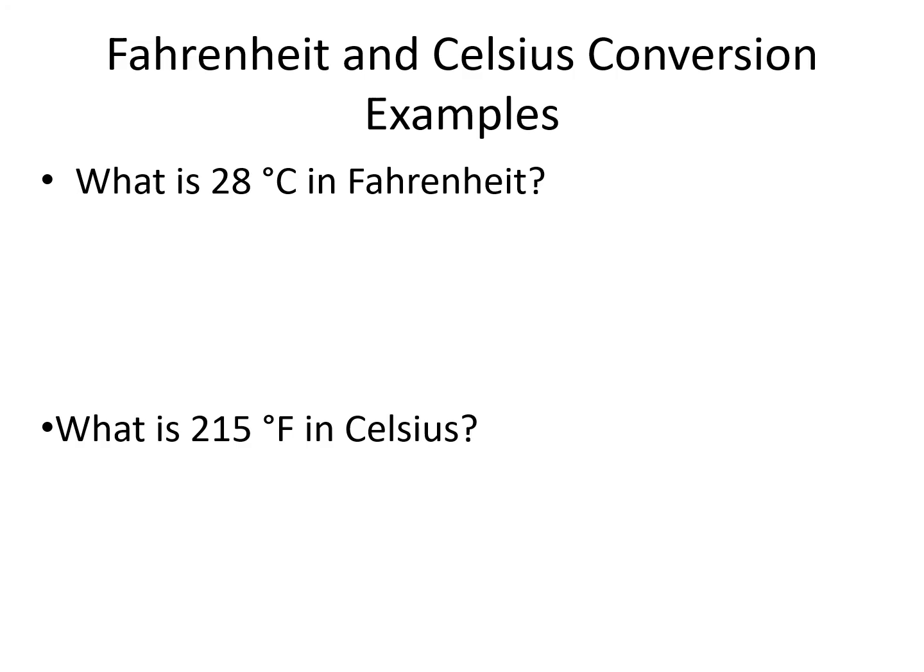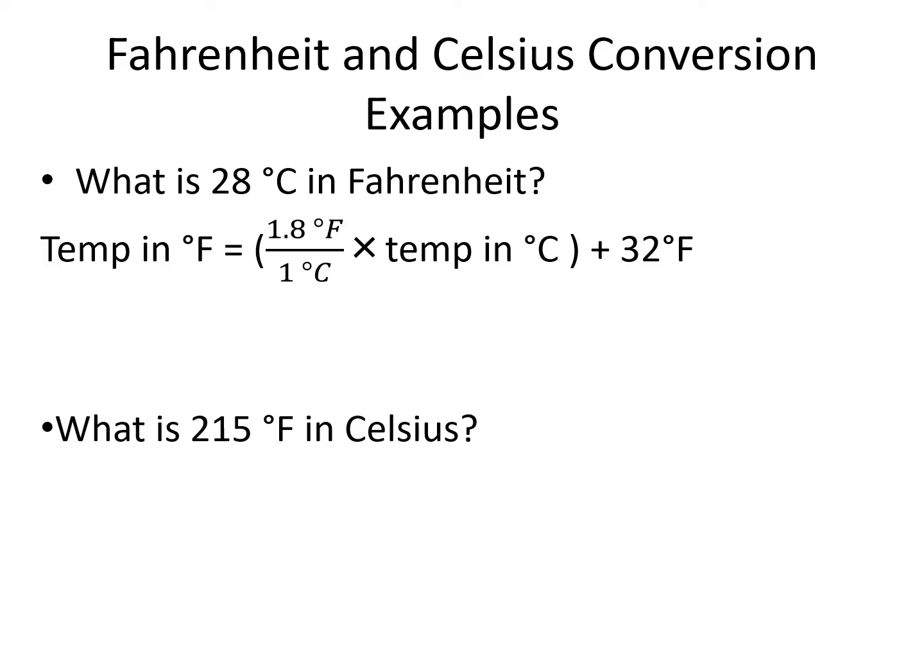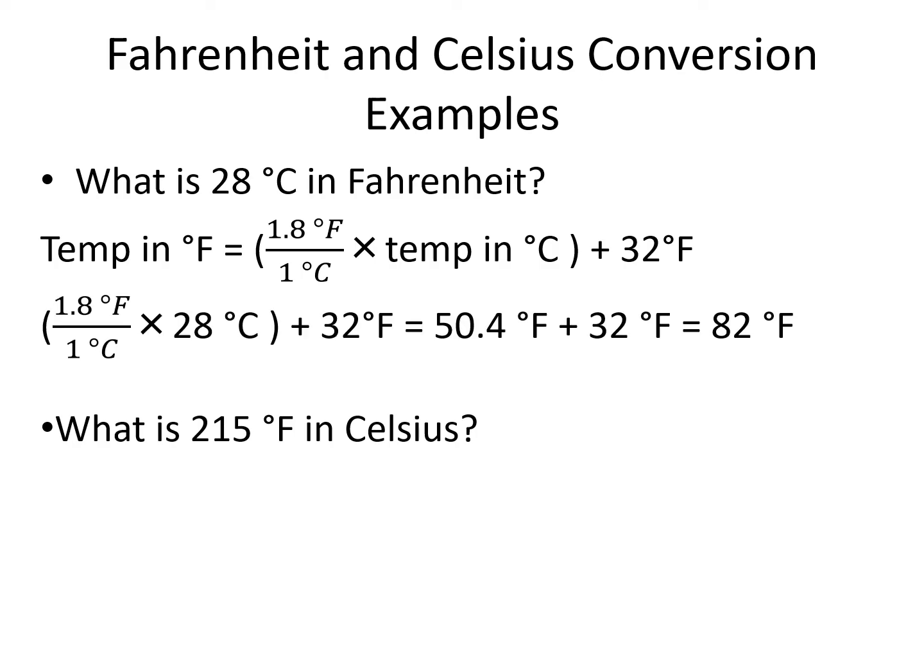In our first example, we are converting between Celsius and Fahrenheit. When we want to solve for Fahrenheit, we use our equation as is. We plug in our 28 degrees Celsius where the equation says temp in degrees Celsius. We do whatever is in the parentheses first, so we have 1.8 times 28, which gives us 50.4. After multiplying them together, we add 32 and come out with 82 degrees Fahrenheit.